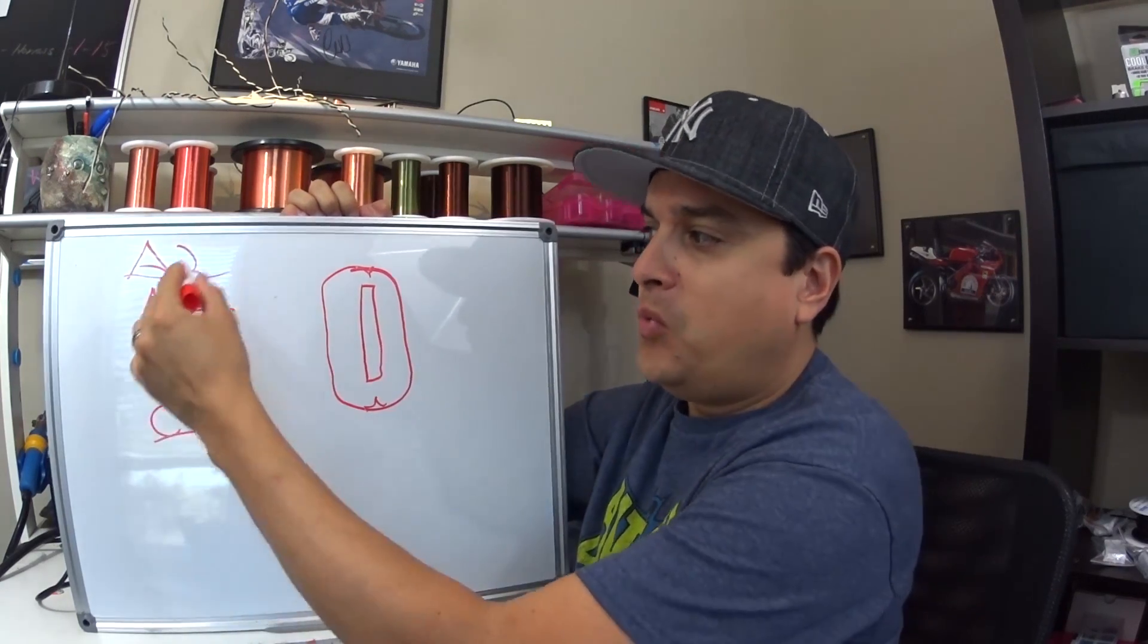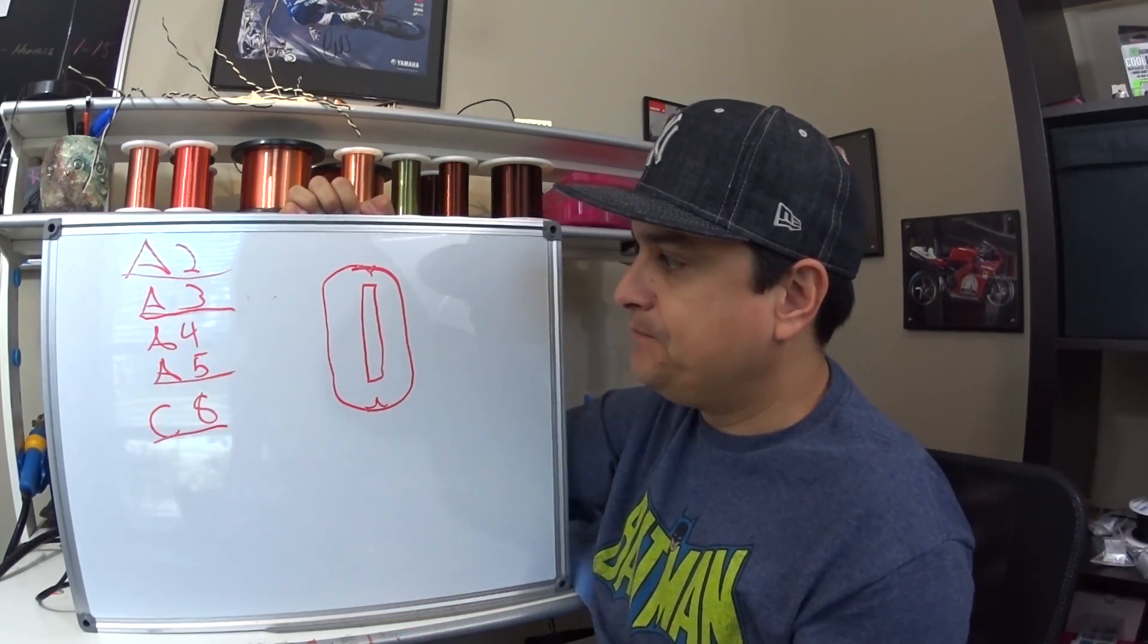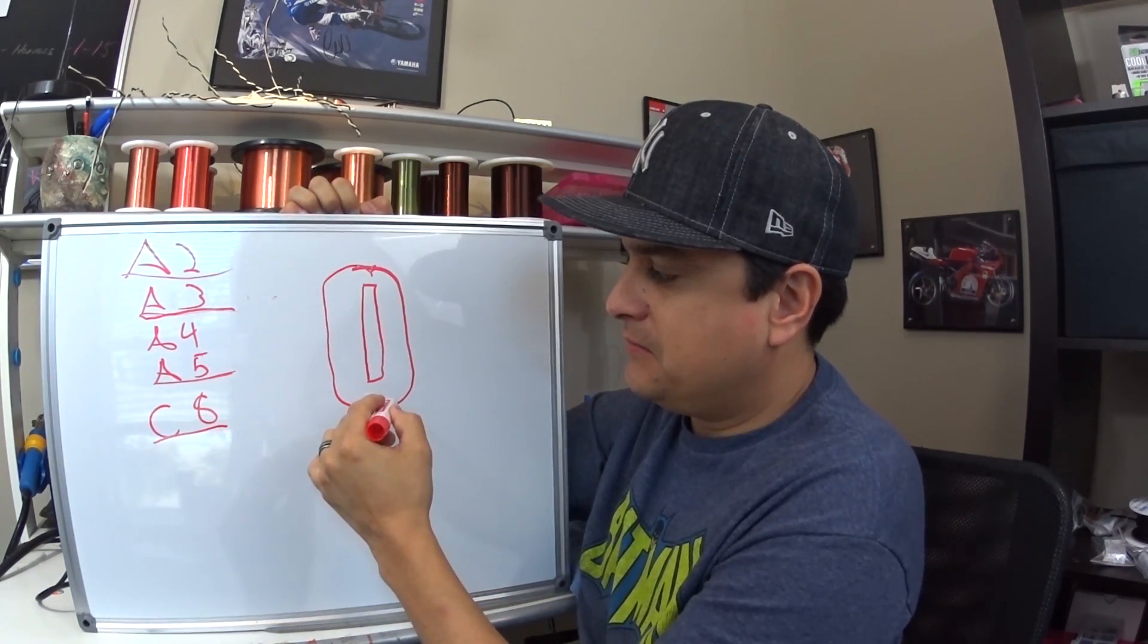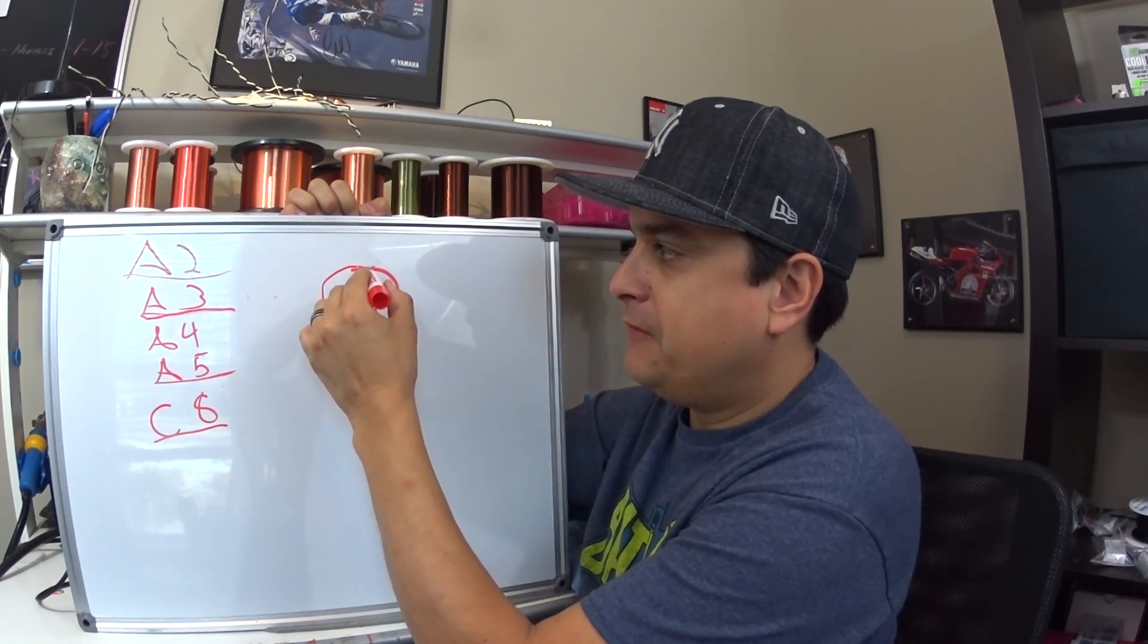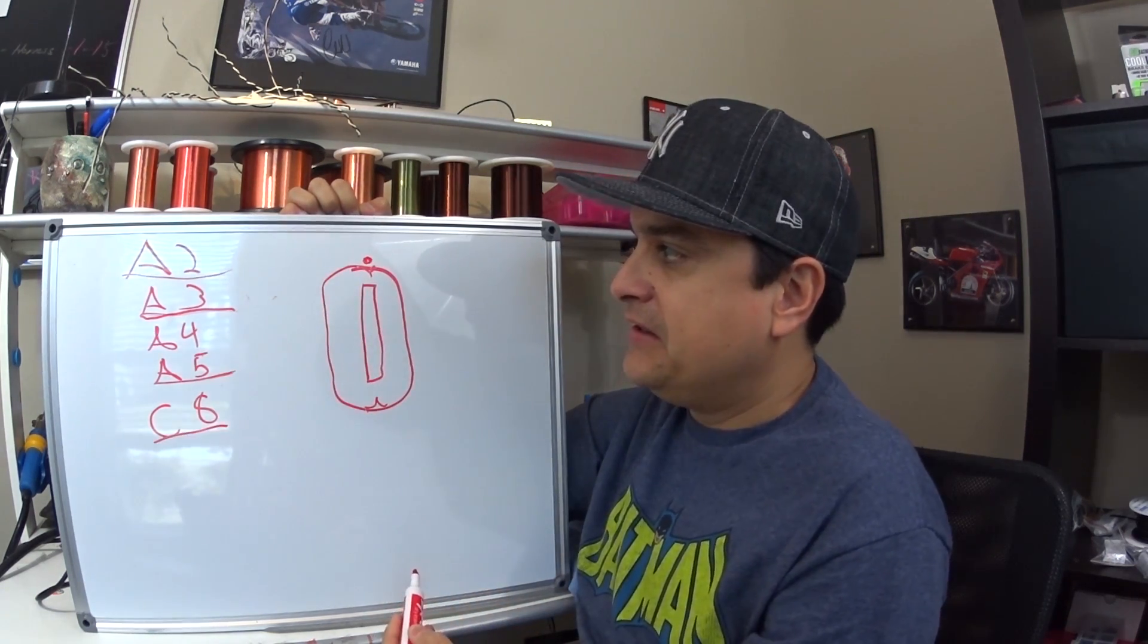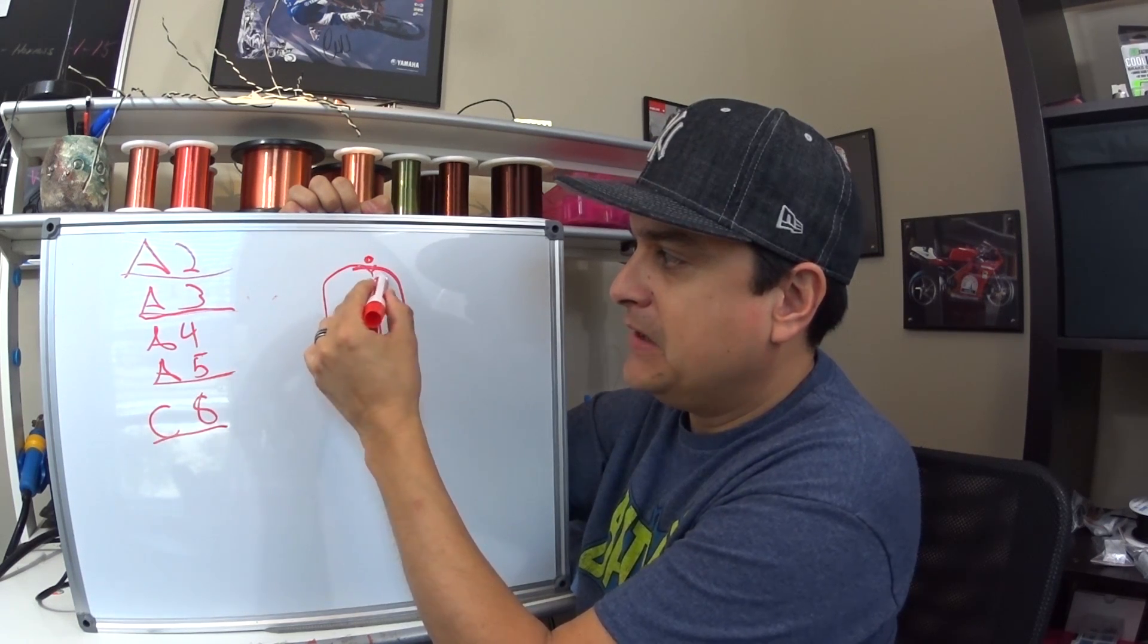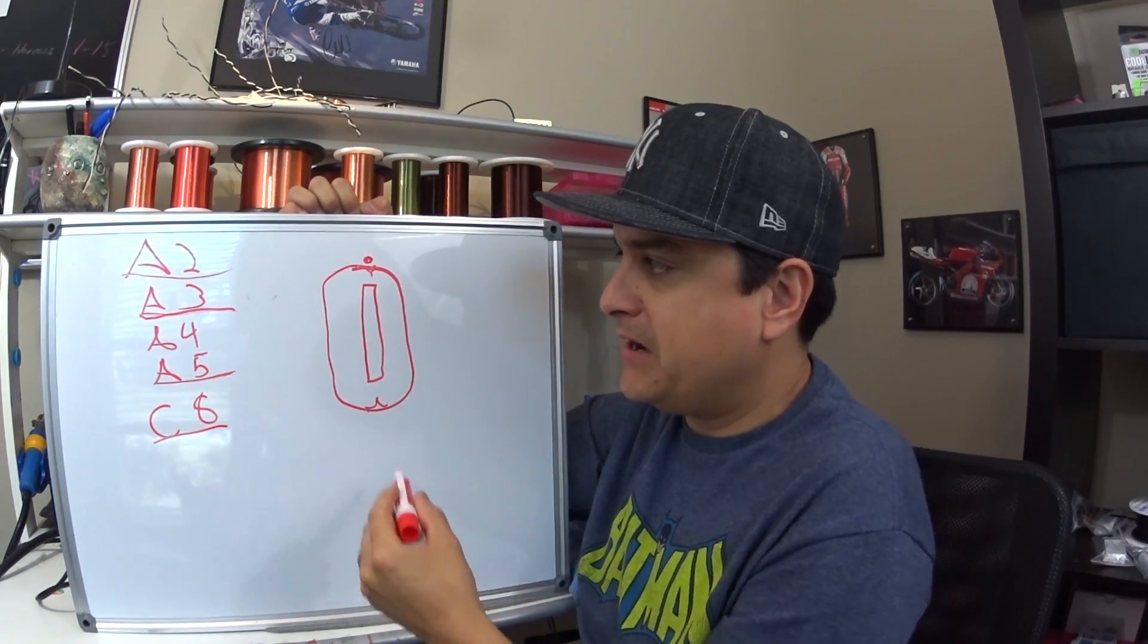So let's talk about why this changes how our pickup sounds. Basically the deal is this. Here is our magnetic field around our pickup. If we place the string just outside of it and we move it, not very much of this magnetic field is going to be disturbed causing our electrons to run back and forth.